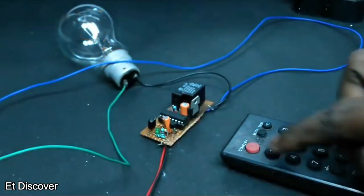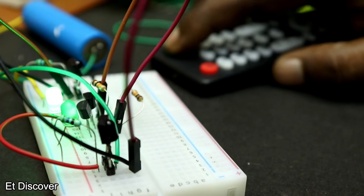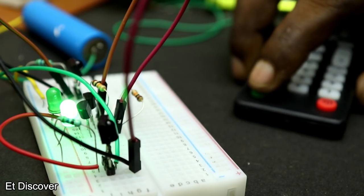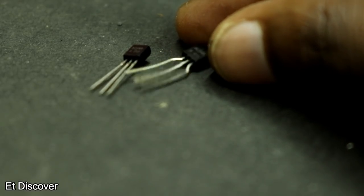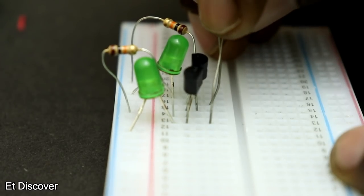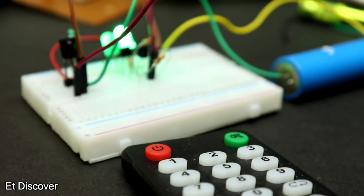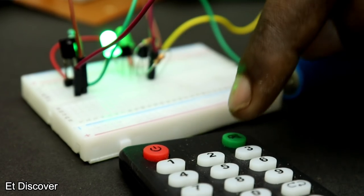I had already made an IR remote system by using IC and microcontroller. Now the question is, is it possible to make it in a more simple way? Like using only two transistors. Today I will try to make an IR remote control system by using only two transistors. So let's see, will it work the same as a microcontroller? Let's get into it.